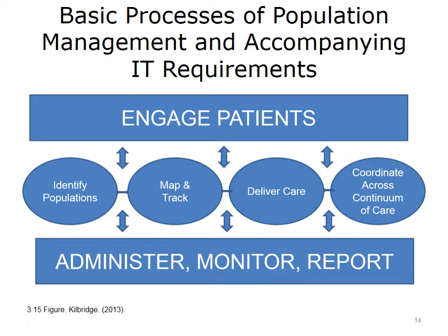Our final objective is to explore ways that population health is supported by IT. In the framework for IT-enabled population health management, there are two main processes supported by health IT: the engagement of patients in their care, and the administration, monitoring, and reporting of population health processes and outcomes. Identifying populations is a key process — identifying patients with chronic disease, or those over a specific age requiring preventive care, or those requiring immunizations — all enabled by population health IT.